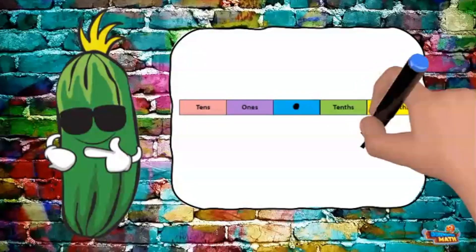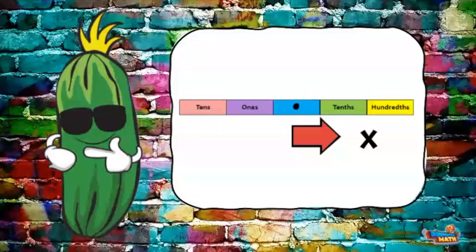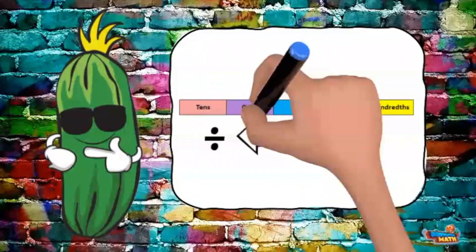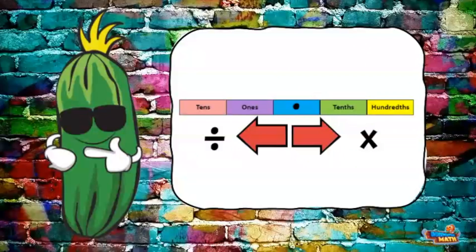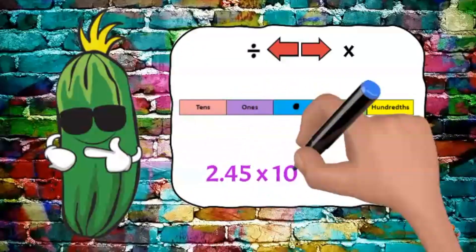When multiplying by powers of 10 the decimal will move to the right. When we divide decimals by a multiple of 10 we move the decimal to the left. Let's look at a few examples.